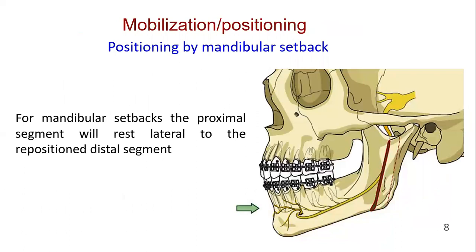For mandibular setbacks, the proximal segment will rest lateral to the repositioned distal segment. This larger one is the distal segment and this smaller one is the proximal segment, which rests lateral to the repositioned distal segment.